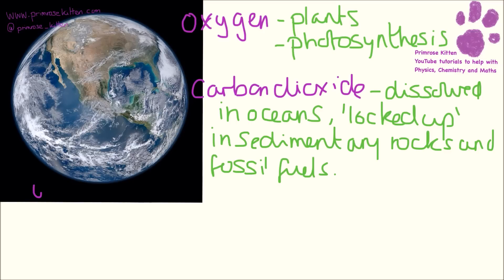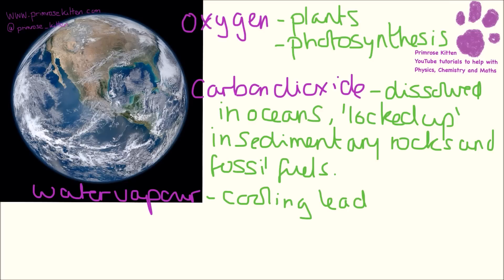Now thinking about the water vapour that was in the early atmosphere — when the Earth cooled, it started to rain and the oceans were formed. That's where the oceans came from, which links back to carbon dioxide, because as the oceans were forming, the carbon dioxide was dissolving in those oceans.